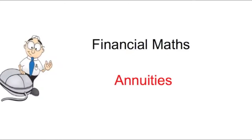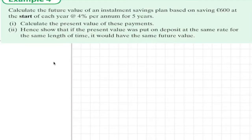Financial maths. This one links annuities and pensions. Example: Calculate the future value of an installment savings plan based on saving 600 euros at the start of each year at 4% per annum for 5 years. So firstly, the future value.